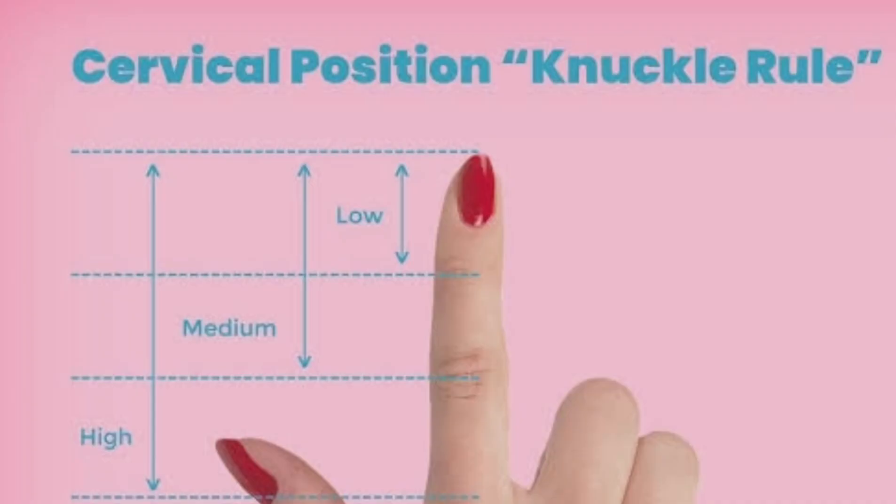If you apply the knuckle rule — you insert your finger into your vagina — you will know whether the position is high or low, whether the area is soft or hard. So you need to apply the knuckle rule. After ovulation, if the egg was not fertilized, the cervix will be low again and the area will be hard.